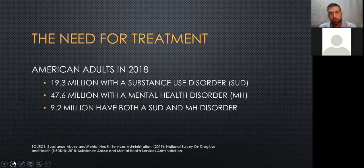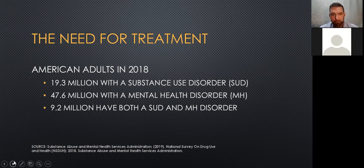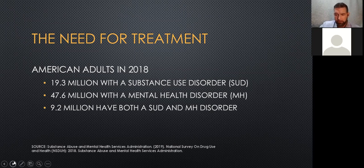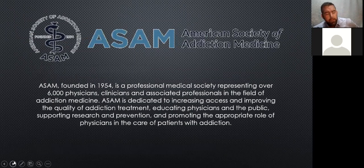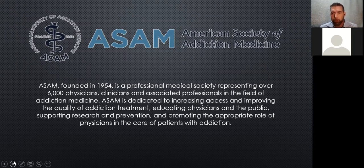Based on a SAMHSA survey, in 2018 American adults had over 19 million with a substance use disorder, 47.6 million with a mental health disorder, and 9.2 million with co-occurring or dual diagnosis — both substance use and mental health disorders. That's a large percentage. About 7.3% of all people in Michigan received some form of treatment within a year.